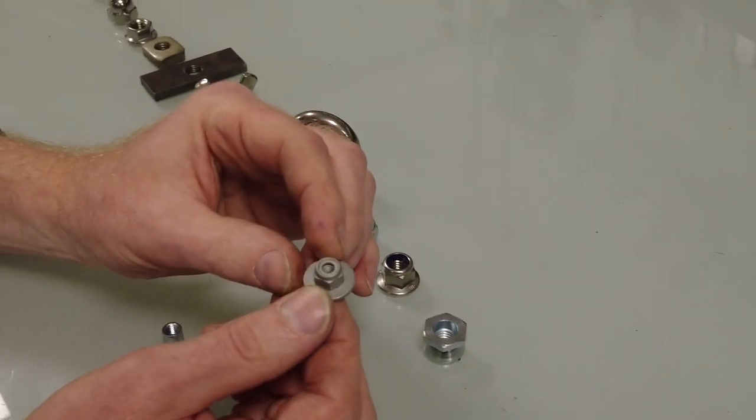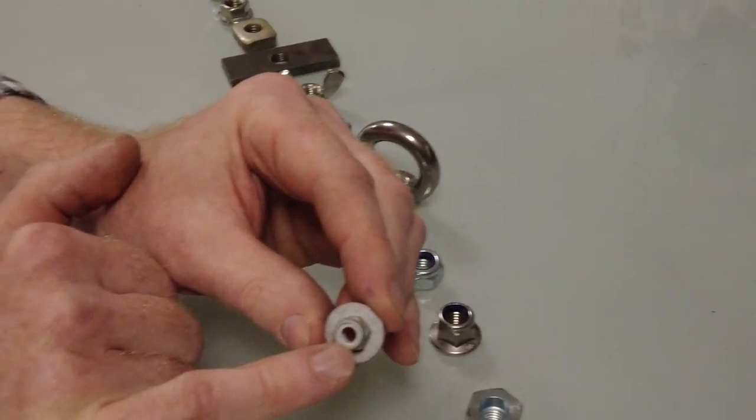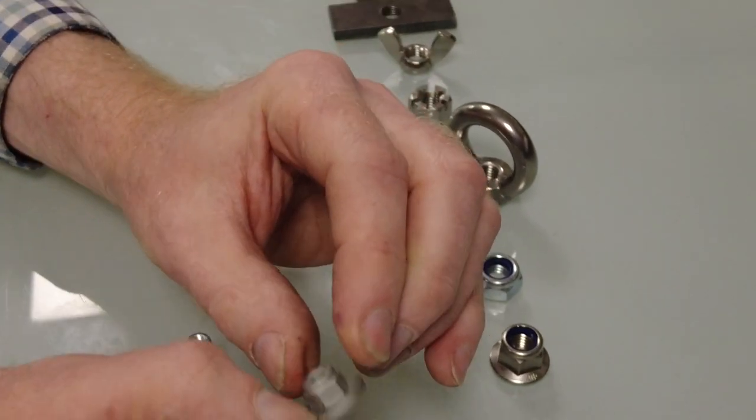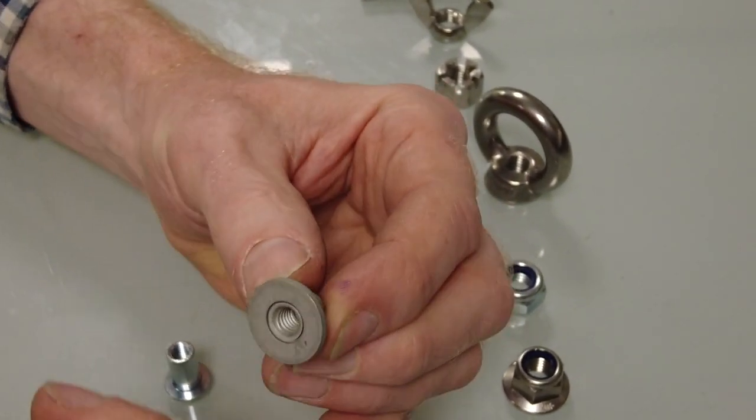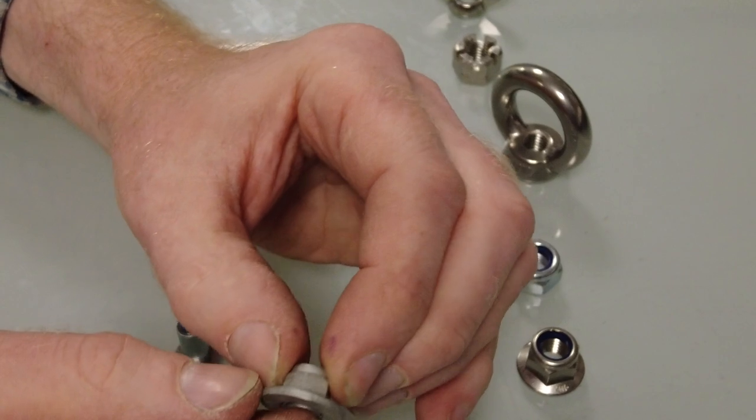This is an interesting nut. It's a nylock - I can see it's not blue but I can see a nylon insert - and on this one the washer is free to spin. I don't actually know what the official name for that is. It's a sort of integrated washer nylock nut.